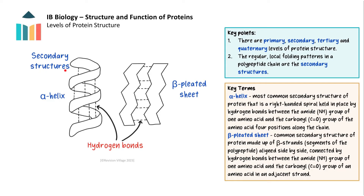The secondary structure of a polypeptide chain refers to the regular, local folding patterns that arise within a specific segment of the polypeptide chain. There are two common types of secondary structure. The most common being the alpha helix. The alpha helix has a right-handed spiral conformation, resembling a coiled spring. The structure is stabilised by hydrogen bonds formed between the amide (NH) group of one amino acid and the carbonyl (C=O) group of the amino acid located four positions down the chain. The alpha helix is a compact and stable structure.